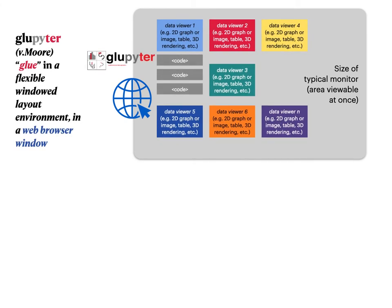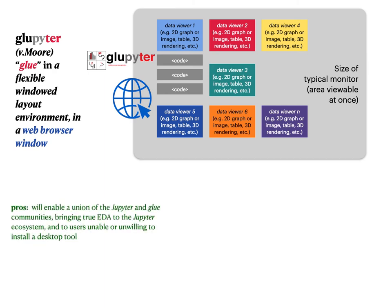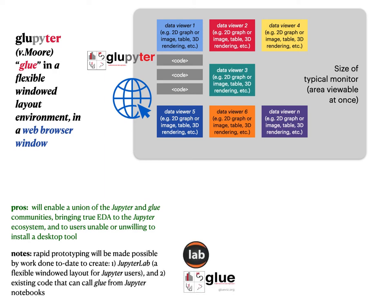What we want to do is take those windows and put them back in a reconfigurable windowing layout and do it in a web browser — the infamous Glupiter. The advantage is that it unifies the Jupyter and Glue communities and brings real exploratory data analysis to the Jupyter ecosystem. It also solves the problem of people not being able or wanting to install a desktop tool. A lot of the work has already been done because we can already run Glue from Jupyter Notebooks, and Jupyter Lab, which is a flexible windowing system that's part of the Jupyter ecosystem, already exists.